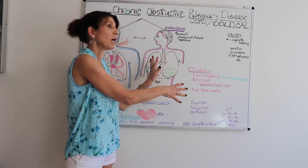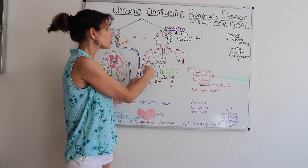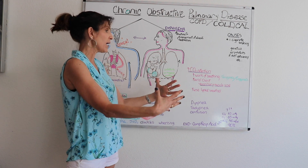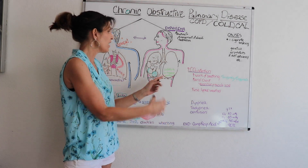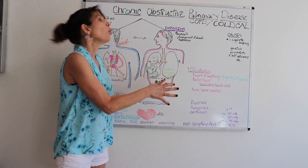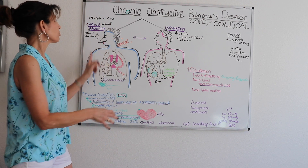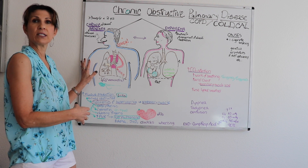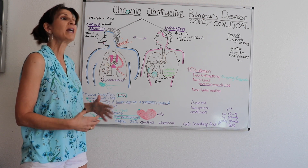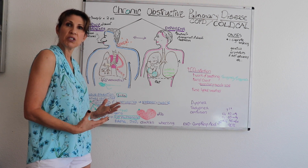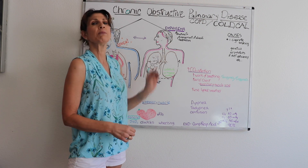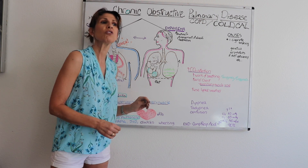Emphysema is actually a structural problem of the alveoli being hyperinflated and the tissues being damaged, whereas the chronic bronchitis patient is characterized by symptoms of cough and excess mucus production.